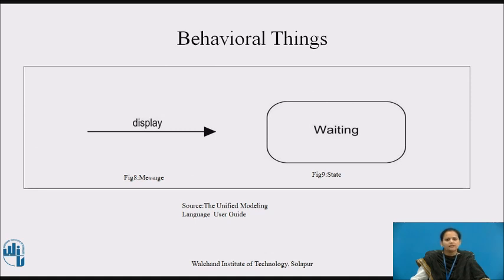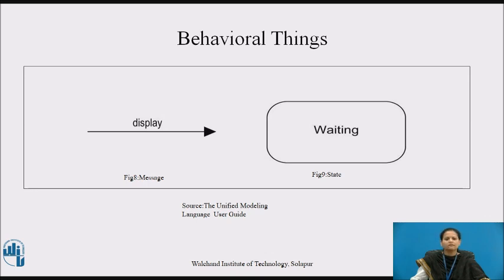Behavioral things are the dynamic parts of UML models. These are the verbs of a model, representing behavior over time and space. There are two primary kinds of behavioral things. First, a message is rendered as a directed line, almost always including the name of its operation, as shown in figure eight. Second, a state is rendered as a rounded rectangle, usually including its name and its substates if any, as shown in figure nine.